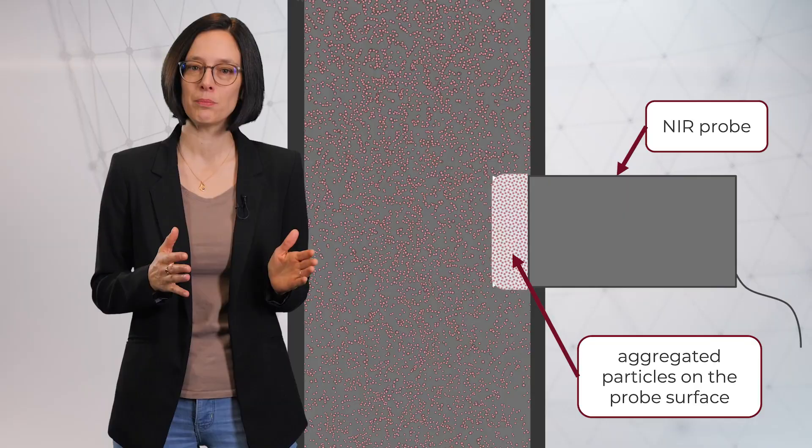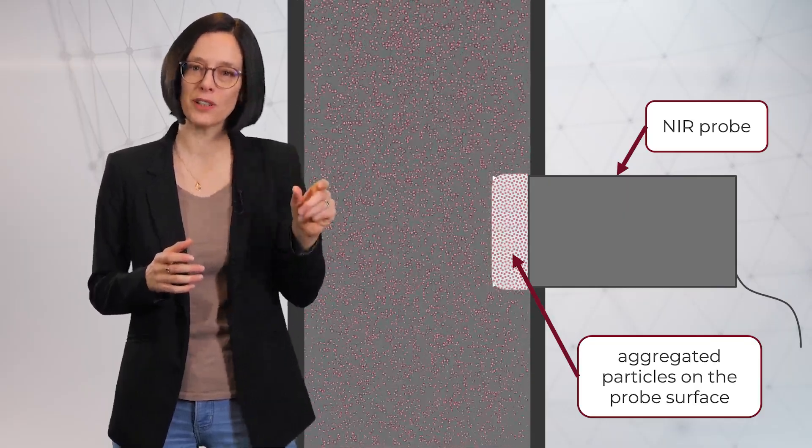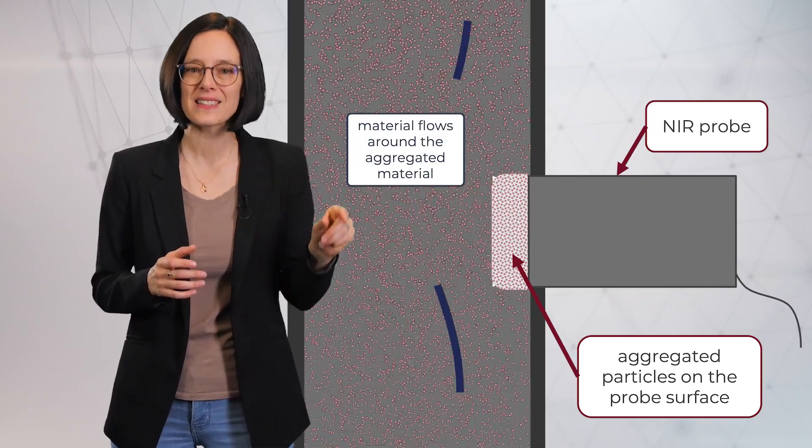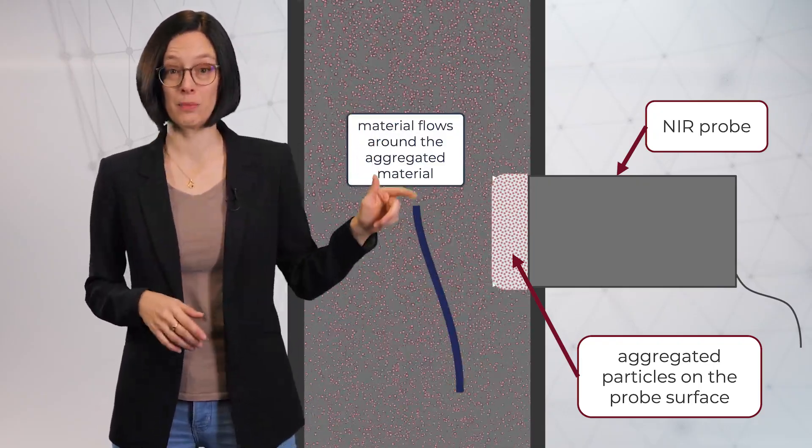Probe fouling means, for example, that a fixed layer of material gets stuck to the surface of the probe, and then only this fixed layer is measured and not the material passing by.